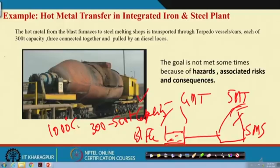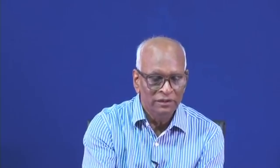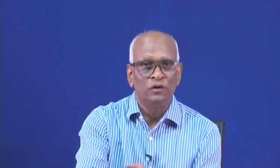To deliver hot metal properly to the steel melting shop, the whole equipment must have mechanical integrity. The vessel should not fail, the drive wheel should not fail, the axle should not fail. If it fails, what will happen with 300–400 tons of hot metal at more than 1,000 degrees centigrade? There is an operator who takes it.